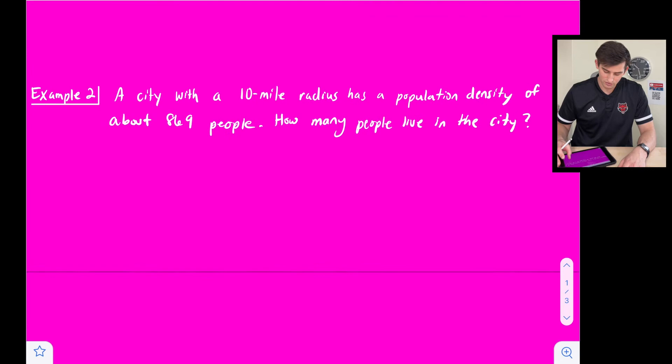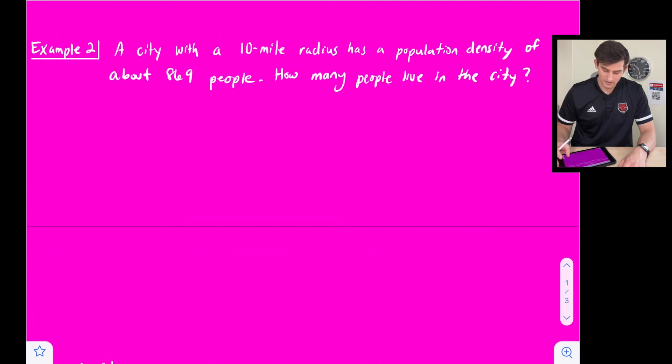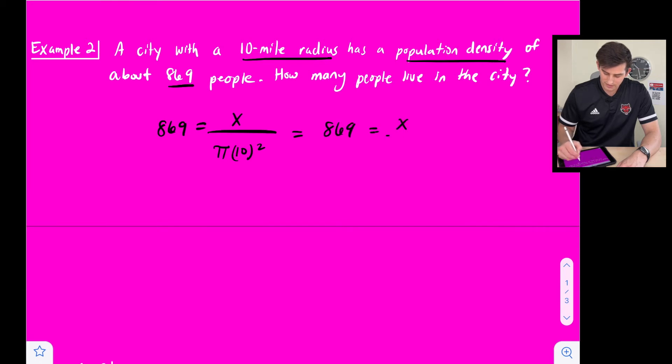Now let's look at example two. We have a 10 mile radius, we know the population density is 869 people. How many people live in the city? So now we can say 869 is equal to the number of people, we'll just say x, and our area will now be pi times 10 squared. So this is 869 is equal to x over 100 pi.